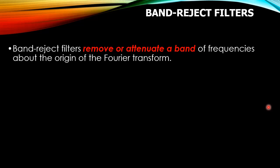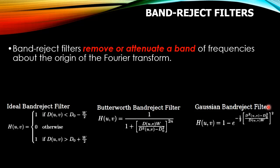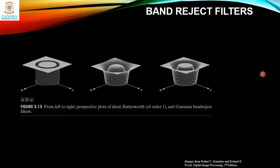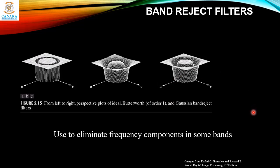Band reject filters essentially remove or attenuate a band of frequencies about the origin of the Fourier transform, similar to the LPFs and HPFs studied in the previous section. We can construct ideal, Butterworth, or Gaussian band reject filters as given by these equations — they reject a particular band and allow all other frequencies to pass through. This figure gives the 3D representation: the ideal band reject filter, the Butterworth band reject filter of order one, and the Gaussian band reject filter.